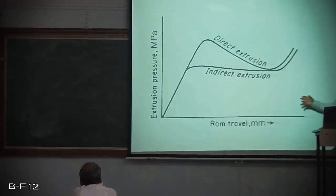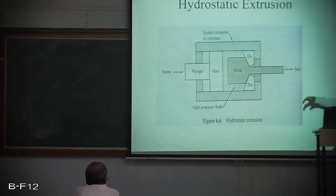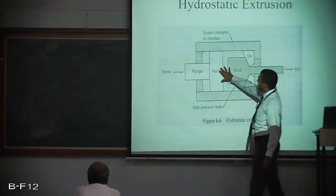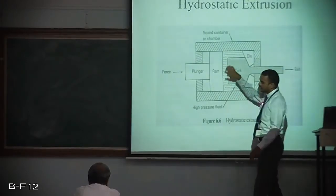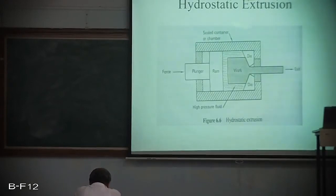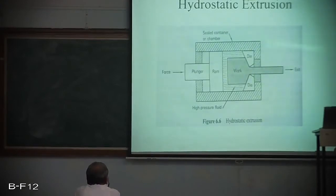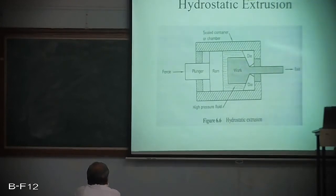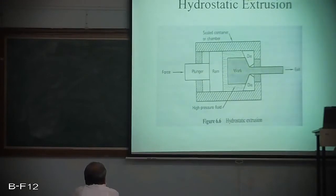Next we discussed extrusion pressure versus ram travel. In hydrostatic extrusion, a pressurized liquid medium is used to deform metal rather than applying a direct load on the billet. Negligible friction occurs between the work metal and the container wall, so less force is required. The advantage is good dimensional accuracy and surface finish.